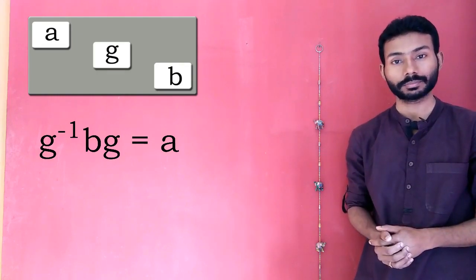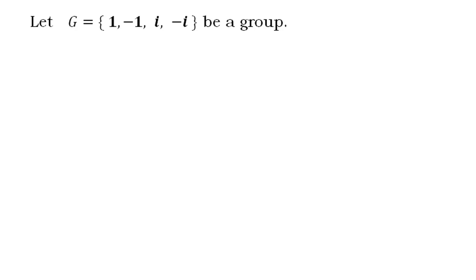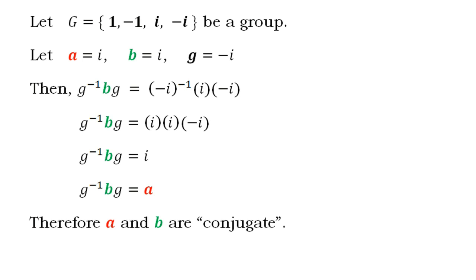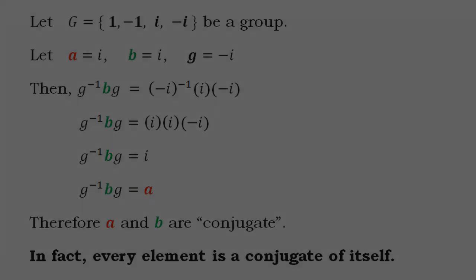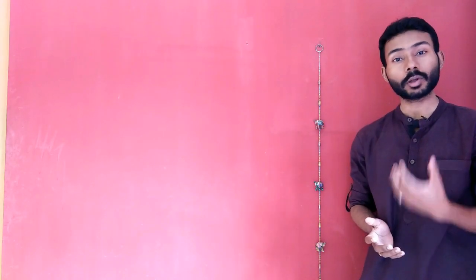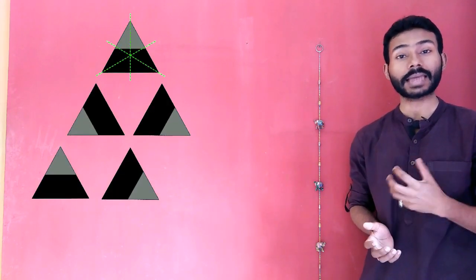Let's take a look at an example. Let's take the dihedral group D3 that contains all those different triangles which are obtained when we rotate or flip a triangle about its axis of symmetry.